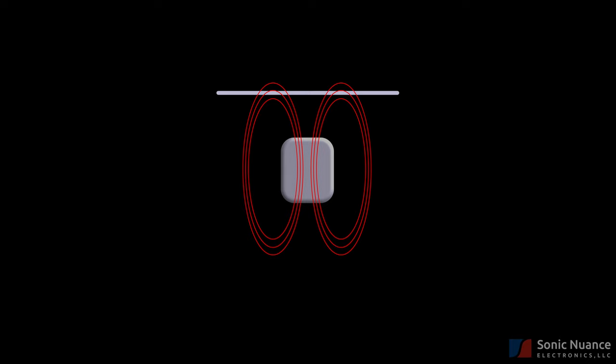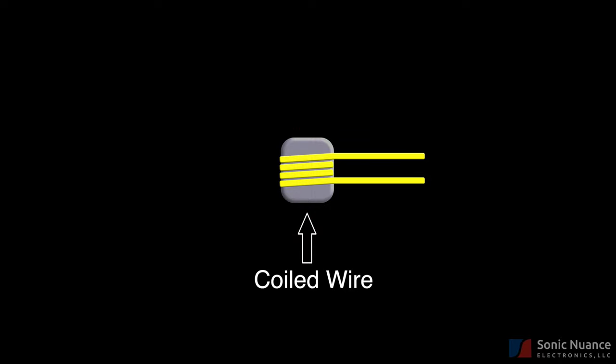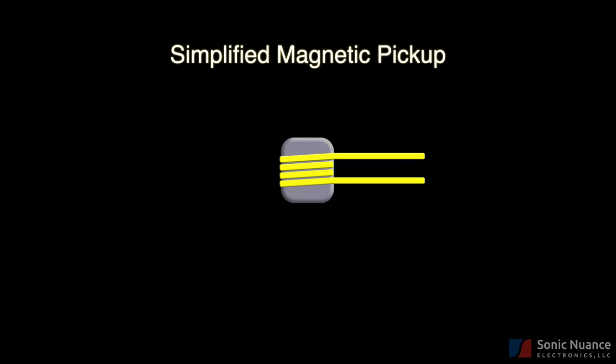This is an important point, that nylon strings require a different type of pickup, known as piezoelectric pickups. We'll talk about that in a future video, so please subscribe, and you'll know as soon as that one comes out. But again, we're focusing on magnetic pickups, so the string needs to be magnetizable. So back to our magnet. We are going to wrap a coil of wire around this magnet, and we'll remove the magnetic field lines for simplicity. We now have our simplified magnetic pickup, which is essentially a permanent magnet wrapped with a coil of wire.